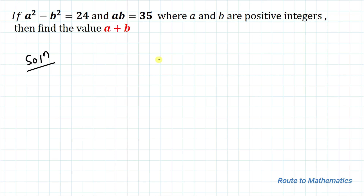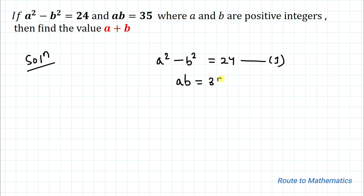The first given equation is a² minus b² equals 24, and our second equation is ab equals 35.